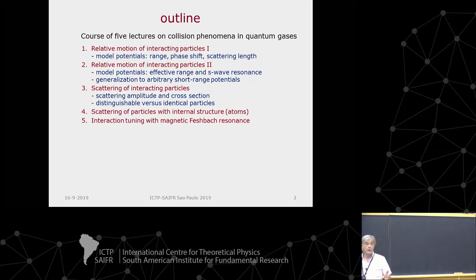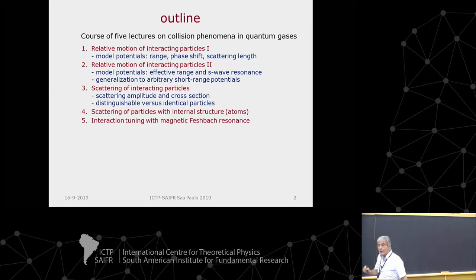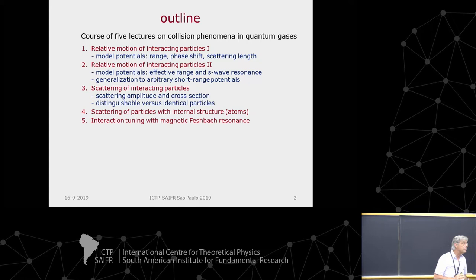Normally, when you have two particles that are interacting, the interaction is given by God. In our field, we can tune the interaction by magnetic field — in situ we can make interactions attractive or repulsive. That is a beautiful aspect: you have this control. It's one of the very strong features of the field of ultra-cold atoms.